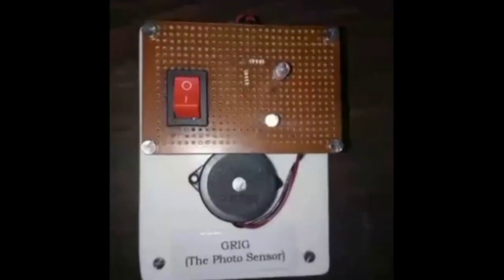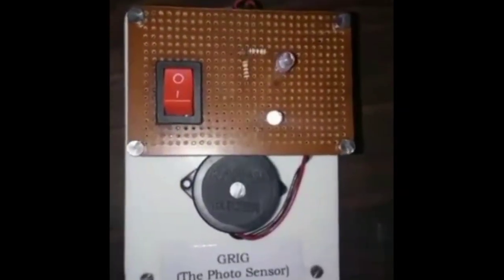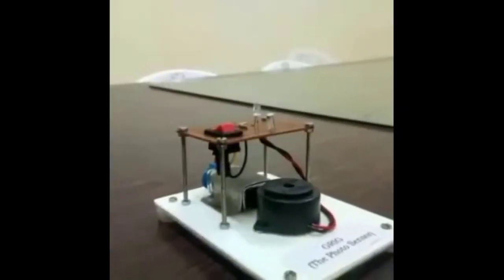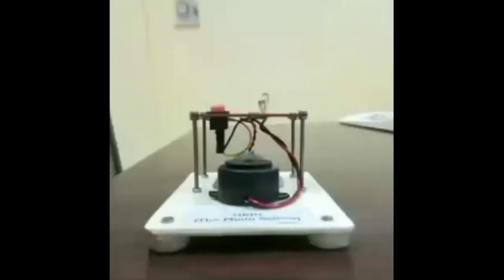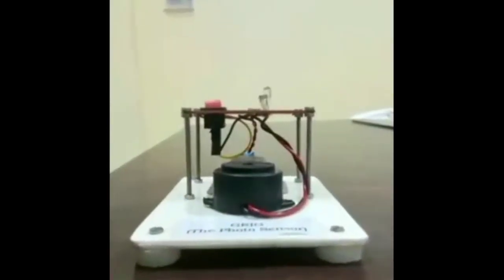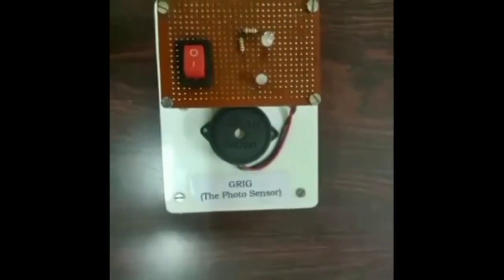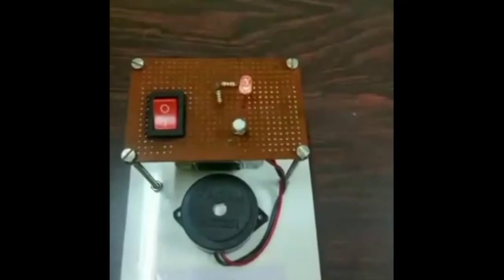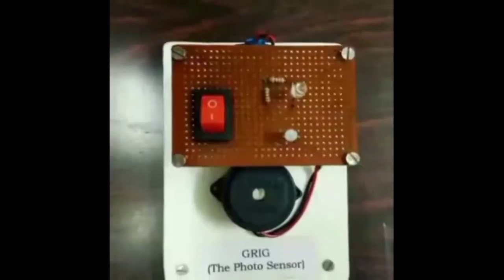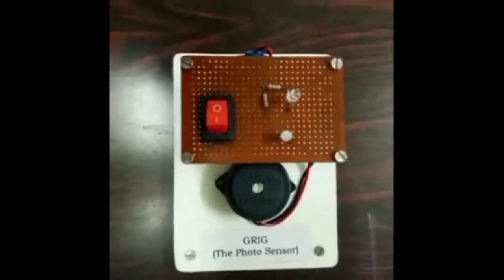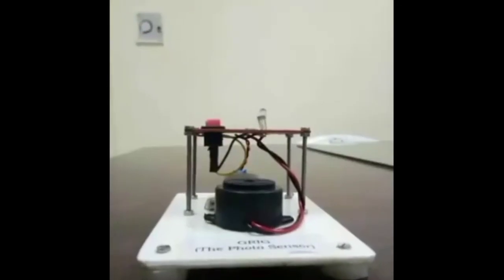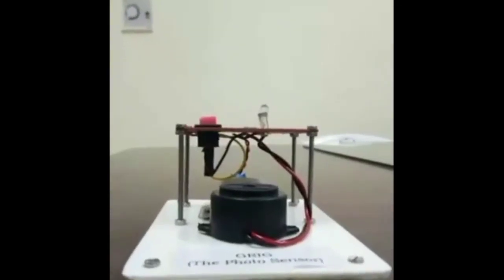Here are some of the components used: LDR (light-dependent resistor), resistors, 9V battery, LED, buzzer, transistor or switch, wires, acrylic sheet, PCP, power distribution board, nuts and bolts, and bushes.